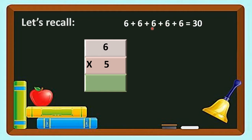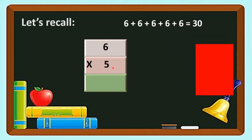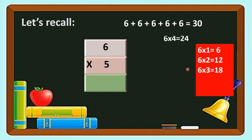So we have added 6, five times. It is also written as 6 into 5, or 6 multiplied by 5. With the help of tables, we can find out the answer. So 6 ones are 6, 6 twos are 12, 6 threes are 18, 6 fours are 24, and 6 fives are 30. So our answer is 30.